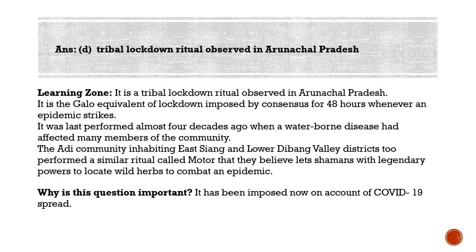The Gallo tribe follows 'Ali-Ternam' — the word 'Ali' means epidemic and 'Ternam' means to forestall, so it is a ritual to ward off an epidemic. These rituals were last performed almost four decades ago when a waterborne disease affected many members of the community. They have also been performed periodically for livestock, primarily the semi-wild animal called Mithun, which is prone to contagious disease. The ritual has now been imposed on account of COVID-19 spread — the first time in 30 to 40 years it was performed for human safety. The ritual ended with community leaders sealing five major entry points of the district.